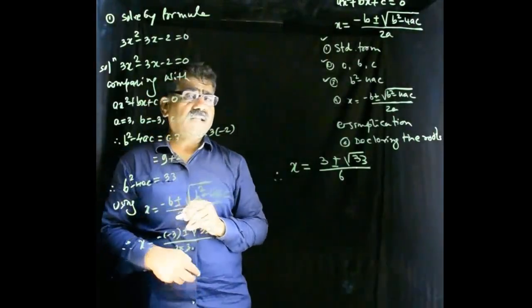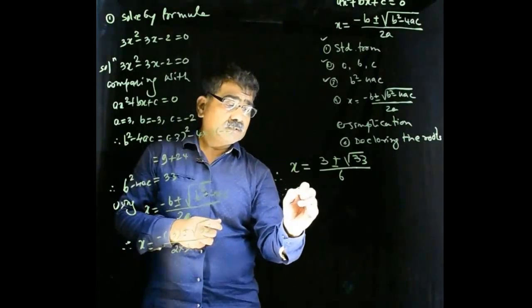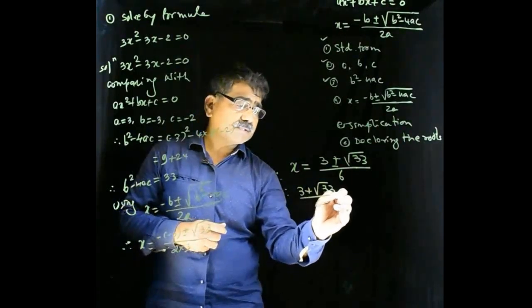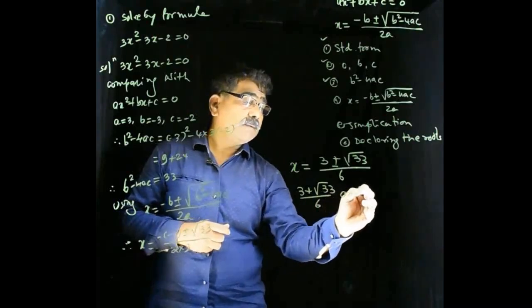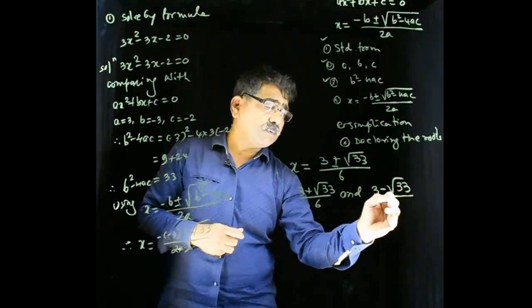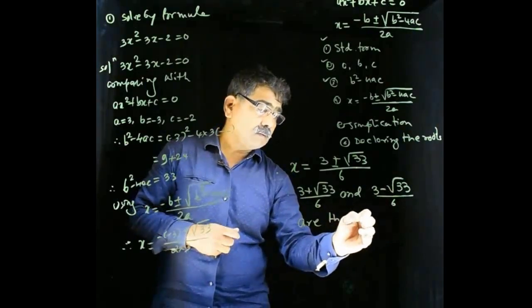Every quadratic equation has 2 roots. There are 2 roots. What are the roots? 3 plus under root 33 upon 6 and 3 minus under root 33 upon 6 are the roots.